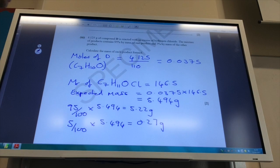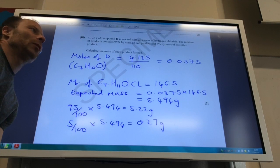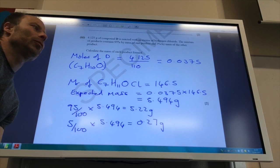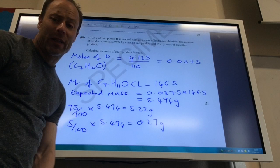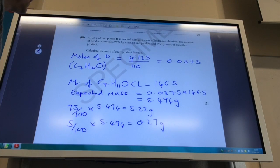Right, so this is a theoretical yield problem, I guess. Slightly more difficult. So I've got 4.125 grams of compound D reacting with an excess of hydrogen chloride, so I don't need to worry about the mass of that. The mixture contains 5% of one product, 95% of the other product. Count the mass of each product form.